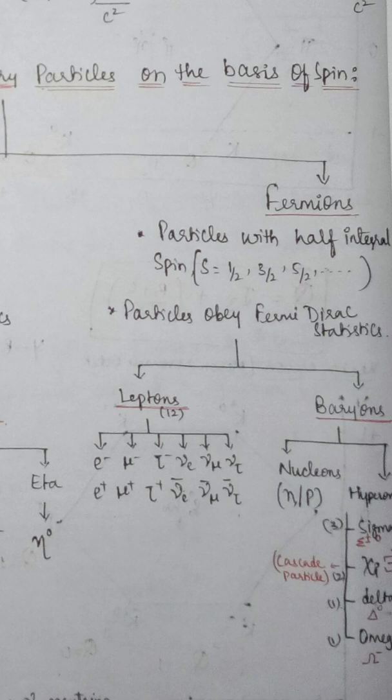Fermions have two categories: leptons and baryons. Leptons are the lighter particles. In leptons, there are a total of 12 particles.